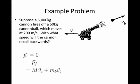The final momentum may be written as the mass of the cannonball times its velocity plus the mass of the cannon times its velocity.